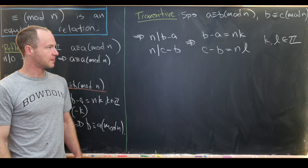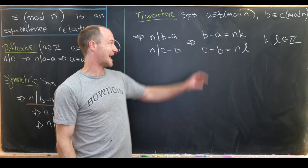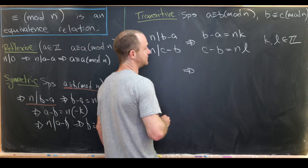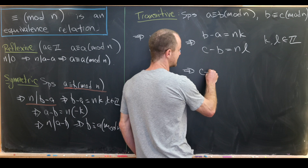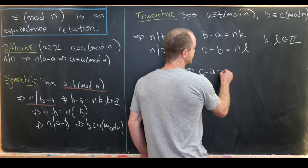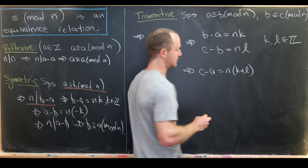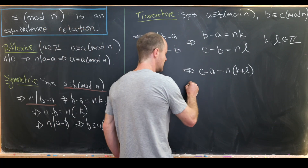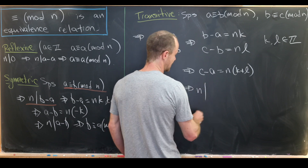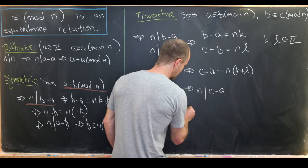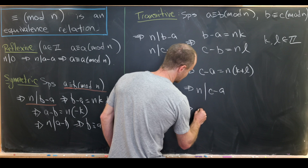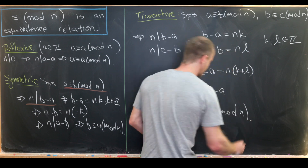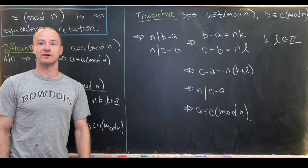We just add these two equations. The b's cancel and we get c minus a is equal to n times (k plus l). Since k and l are integers, k plus l is an integer, meaning n divides c minus a, which is exactly the condition for a to be congruent to c modulo n. That finishes the transitivity proof.